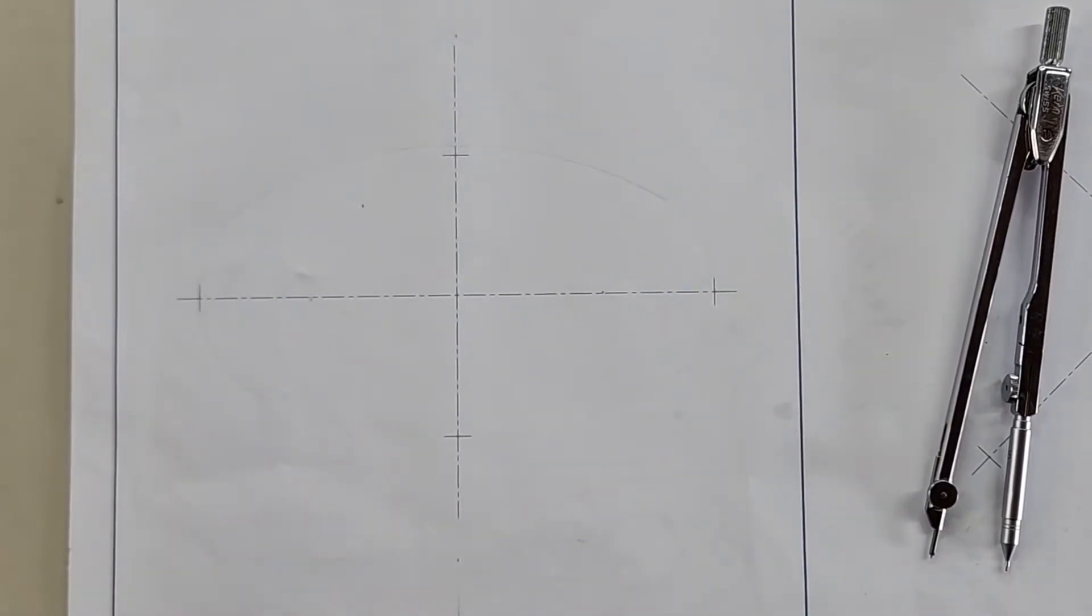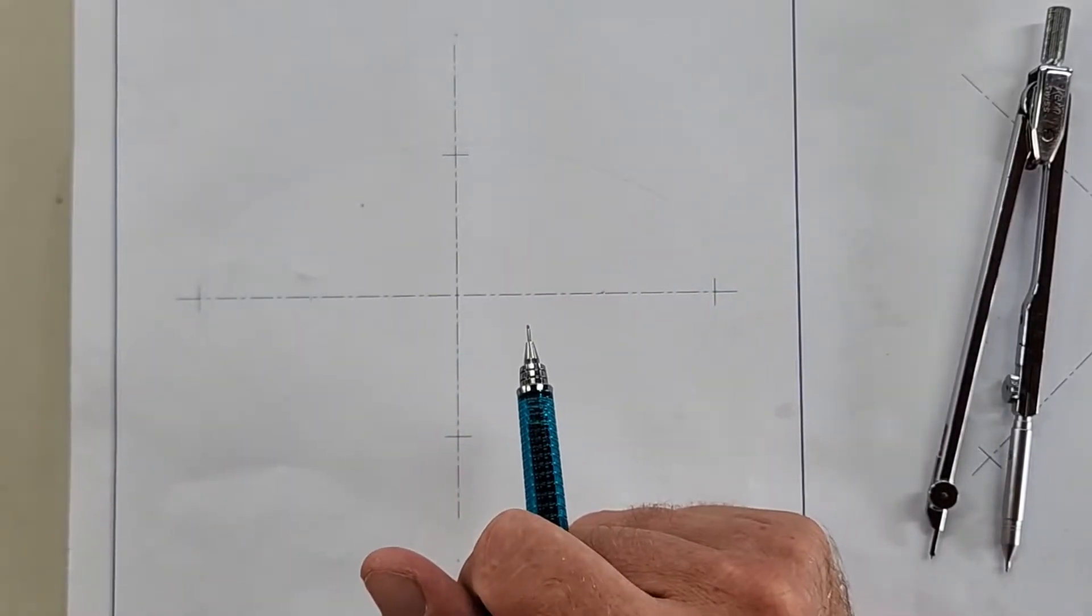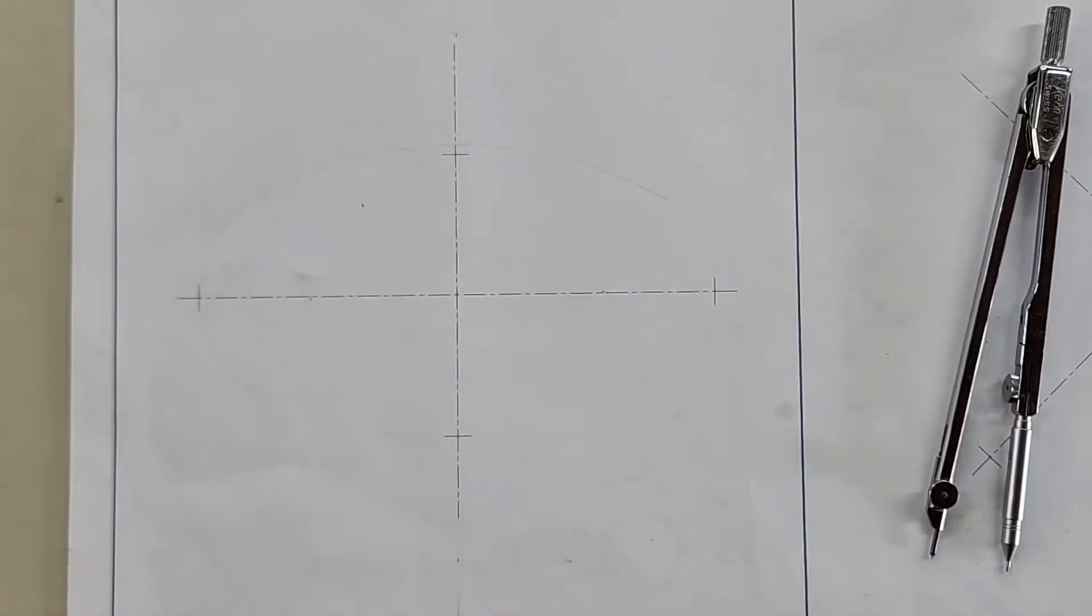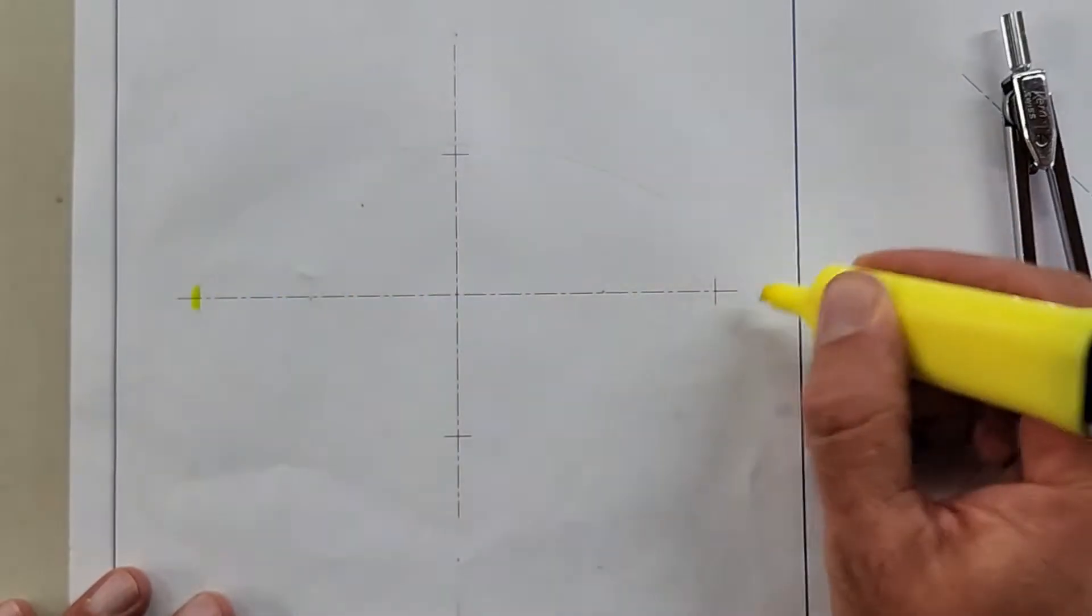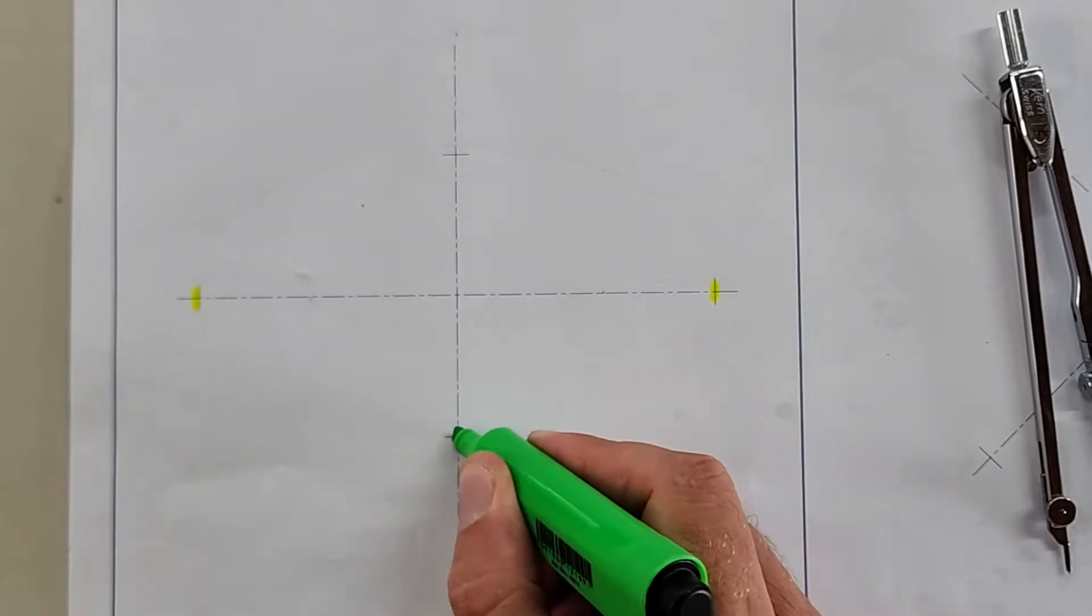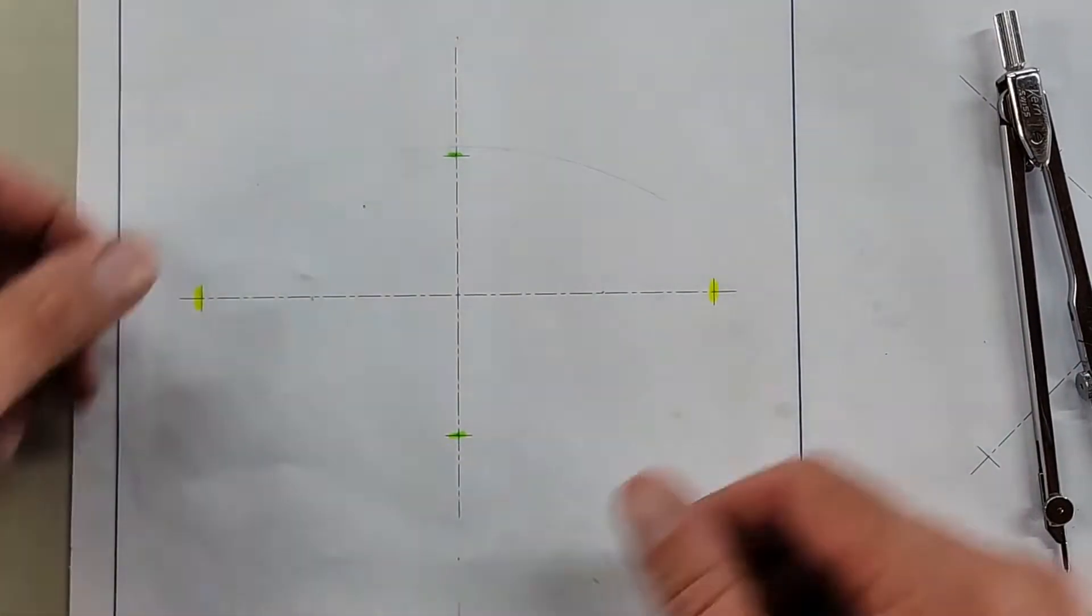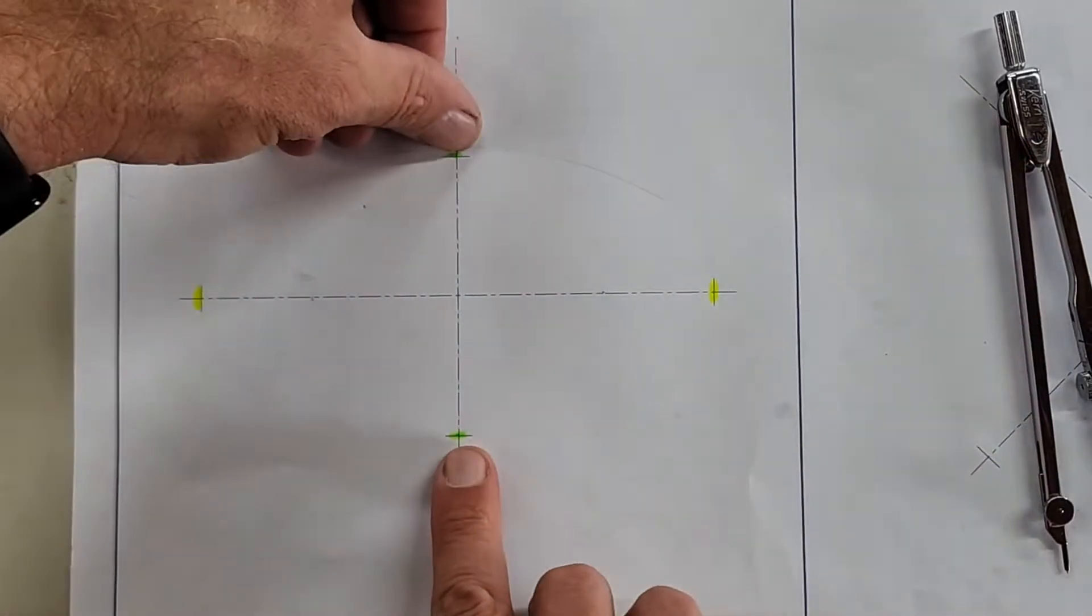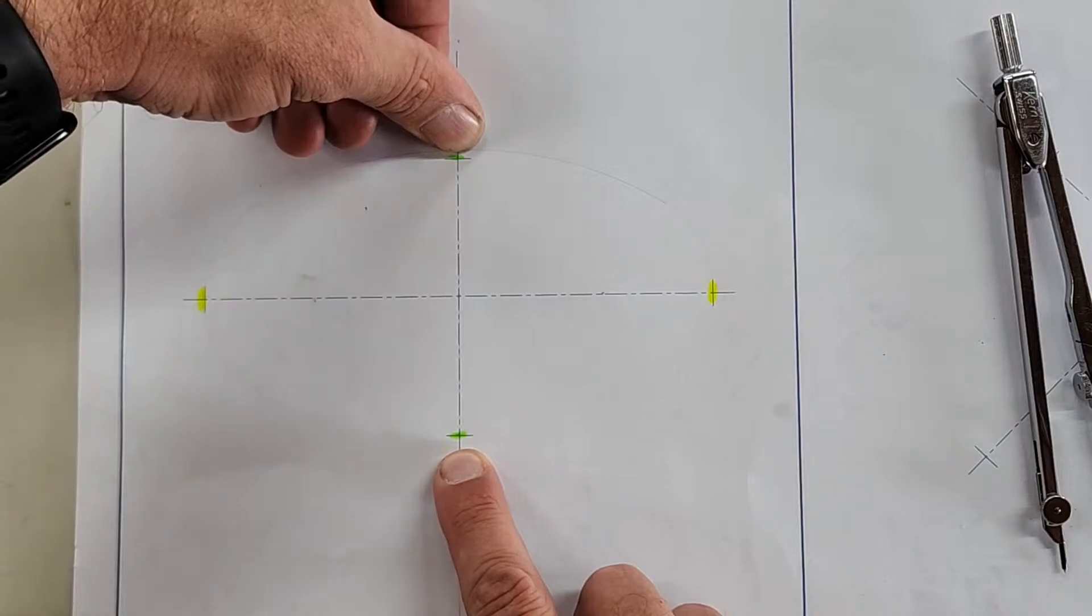Okay everybody, excited for this day? We're going to get started on your very first ellipse construction. Are you ready for it? There are a couple of things I'd like you to pay attention to on the given page. They're going to give you a main axis, which is the longer one.